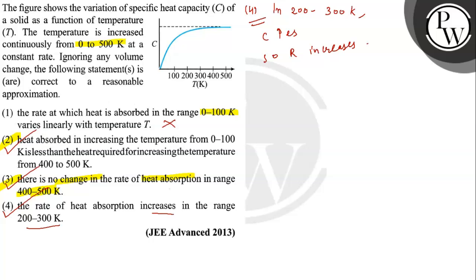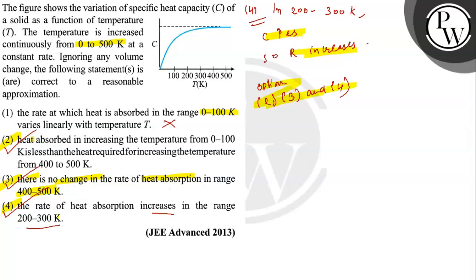In option 4, from 200 to 300 Kelvin, C increases so R also increases — this option is also correct. So the correct answers are options 2, 3, and 4. Hope you understood it well. Best of luck.